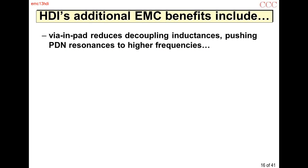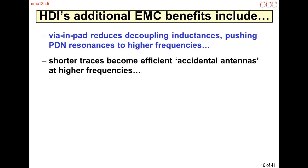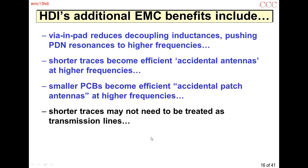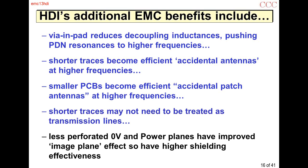Additional benefits from microvias include via-in-pad, which reduces decoupling inductances, pushing resonances in the power distribution network to higher frequencies where there's hopefully less energy to excite them. Shorter traces become efficient accidental antennas at higher frequencies. Smaller PCBs become efficient accidental patch antennas at higher frequencies. If you have a shorter trace, you might not need to treat it as a matched transmission line. The less perforated ground and power planes give an improved image plane effect — a shielding effect — providing higher shielding effectiveness even without any tin cans.